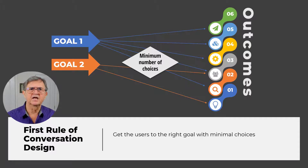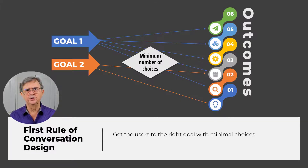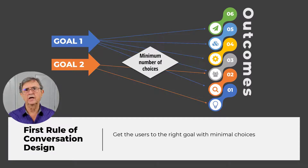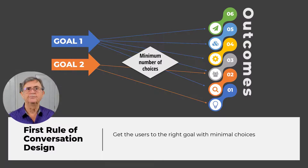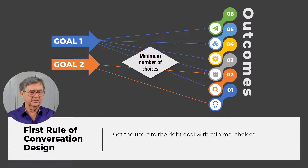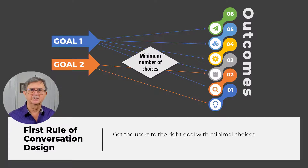The first rule for developing the flow of the conversation is to get the users to the right goal with minimal choices. You only ask questions that are pertinent to their goal — the minimum number of questions needed for the bot to recommend the correct solution. People who have had a bad experience with a chatbot tend to lose any desire to interact with one, so they're going to try their best to get to a human as quickly as possible.